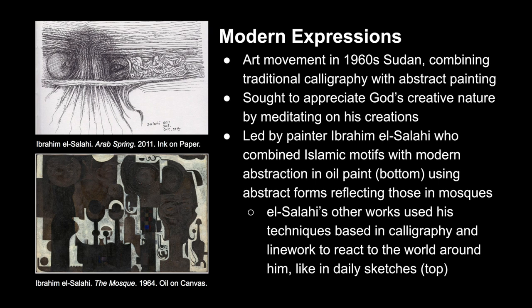In the 1960s, we see an art movement called the Modern Expressionist, seen primarily in Sudan, combining traditional calligraphy with abstract painting. Led by painter Ibrahim El Salahi, this movement sought to appreciate God's creative nature by meditating on his creations. The artist himself did this by combining motifs of Islam and modern abstraction in oil paint, using abstract forms reflecting those in mosques, as seen in the bottom example. Other works by El Salahi used his techniques based in calligraphy and line work to react to the world around him, like in Diggly Sketches, seen in the top example.